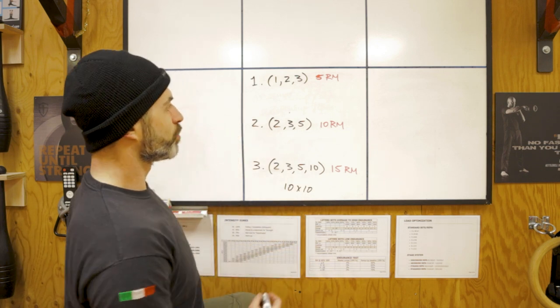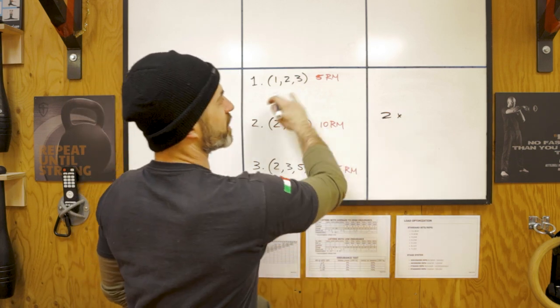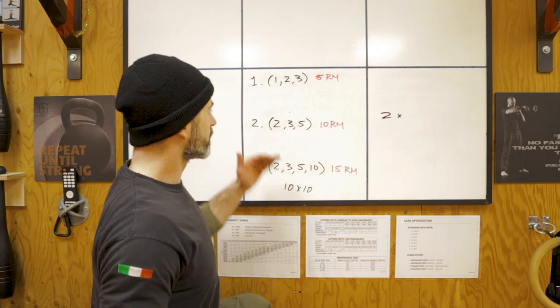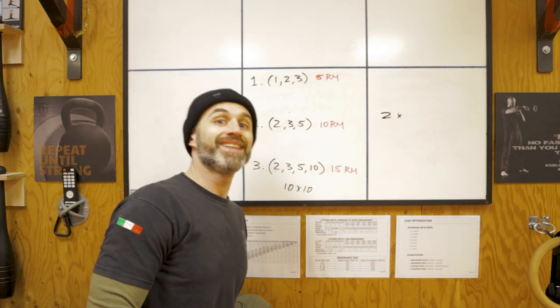So you will begin with two ladders for each day. Two ladders of one, two, three; two, three, five; and two, three, five, ten.